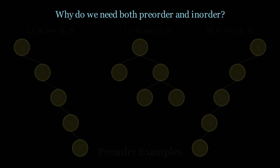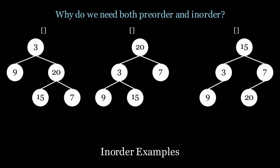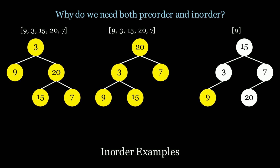Now let's look at the in-order traversals for three more trees. For all three we get 9, 3, 15, 20, and 7 — all three in-order traversals are equal as well. The in-order traversal on its own also does not tell us about the general shape of the tree; it just tells us which nodes were explored first. However, when you combine both the pre-order and in-order traversal, you can guarantee the structure of the tree, which we'll see now.